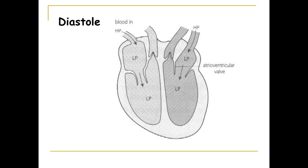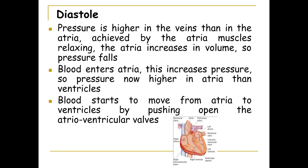Blood then flows into the ventricles through the atrio-ventricular valve, which is open during diastole. You need to be able to talk about each stage in terms of pressure and volume. Because there is higher pressure in the veins and low pressure in the atria, blood flows from the vein into the atria, through the atrio-ventricular valve, and into the ventricles.